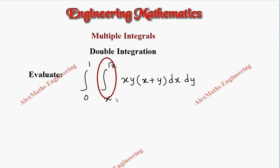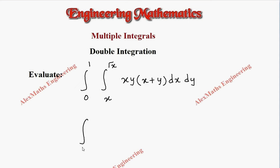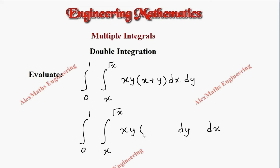Here we notice the limit is in terms of x, so it means we have to integrate first with respect to y, then put in this limit to get everything in terms of x, and then integrate with respect to x. That is the correct approach. So this should be written in the proper form: integral 0 to 1, integral x² to √x, of xy(x + y), dy dx — even though it is given as dx dy, it should be written this way to proceed correctly.